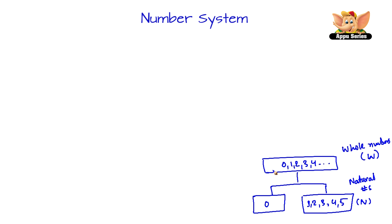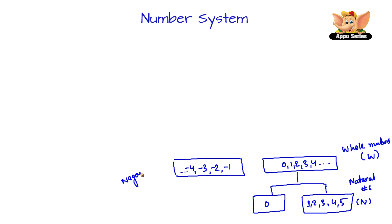While we're talking about all positive numbers, we need to also speak about negative numbers. These are: minus 1, minus 2, minus 3, minus 4, and so on — it just goes on. These numbers are called as negative integers.